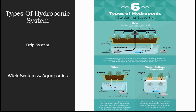Next comes the water culture or deep water culture system. It is the simplest of all active hydroponic systems. The platform that holds the plants is usually made of styrofoam and floats directly on the nutrient solution. An air pump supplies air to the air stone that bubbles the nutrient solution and supplies oxygen to the roots of the plants. This system is the system of choice for growing leaf lettuce.